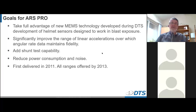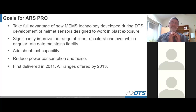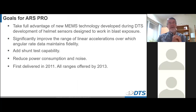What do we get from the ARS Pro? Number one, we're taking advantage of the latest MEMS technology. We significantly improved the range of linear accelerations over which the angular rate data maintains fidelity. We added a shunt test capability — which is extremely important for ensuring you're running a test without a sensor or cable malfunction — and we've reduced power consumption and noise. We first delivered the ARS Pro in 2011, and all ranges since 2013 have been of the ARS Pro second-generation technology.